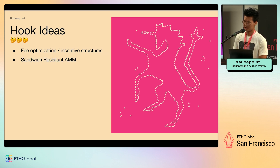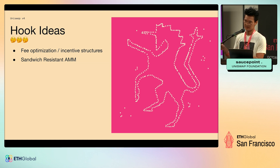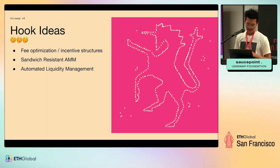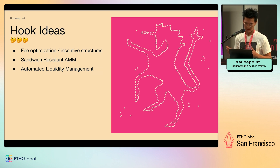Dan Robinson a couple months ago put out really cool work called sandwich-resistant AMM, where for a given direction — say trading ETH into USDC — you pin the price at the start of the block, and every single trade within that block fills at the same price. You can also do automated liquidity management: after swap you could auto-compound fees, expand positions, or concentrate positions.